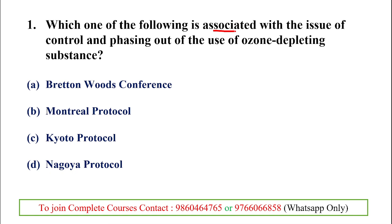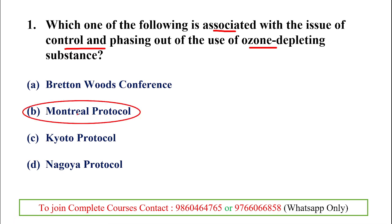Which of the following protocols is associated with the issue of control and phasing out of ODS — that is, ozone depleting substances? The options are Bretton Woods, Montreal, Kyoto, and Nagoya. The one that is related to ODS is the Montreal Protocol.